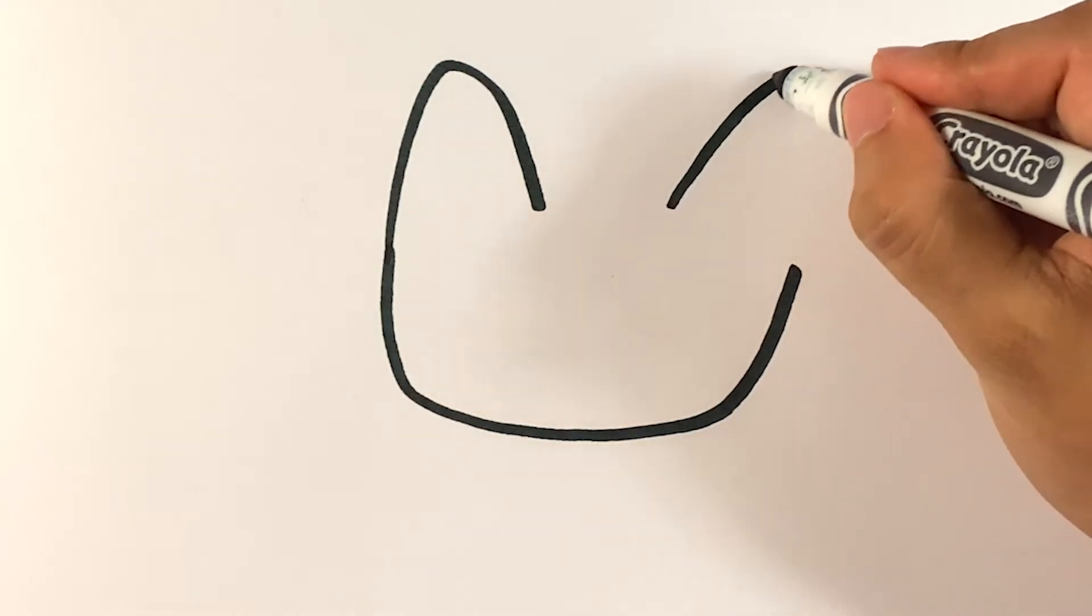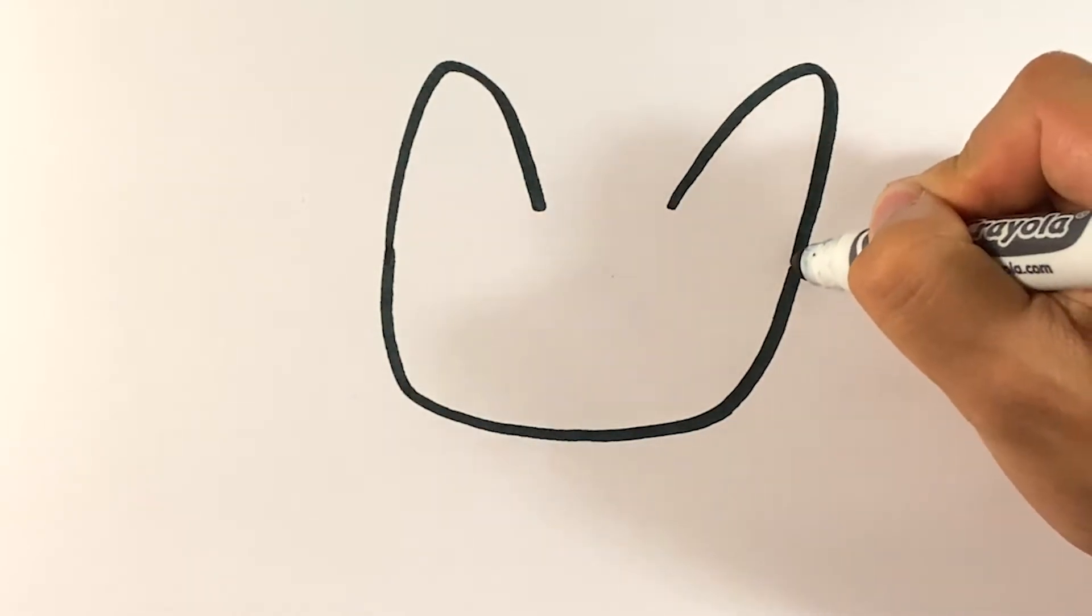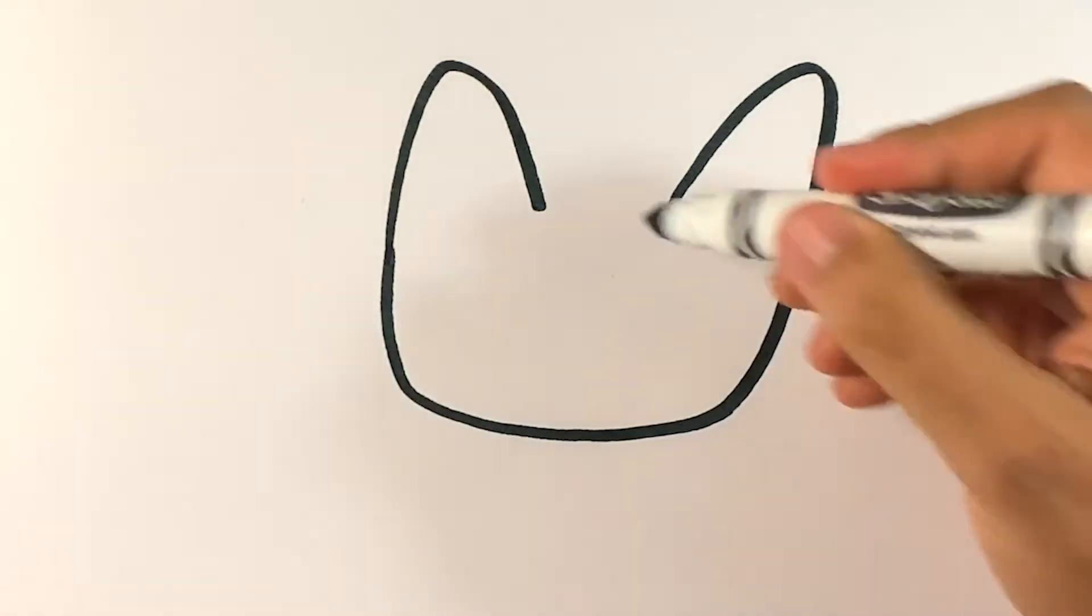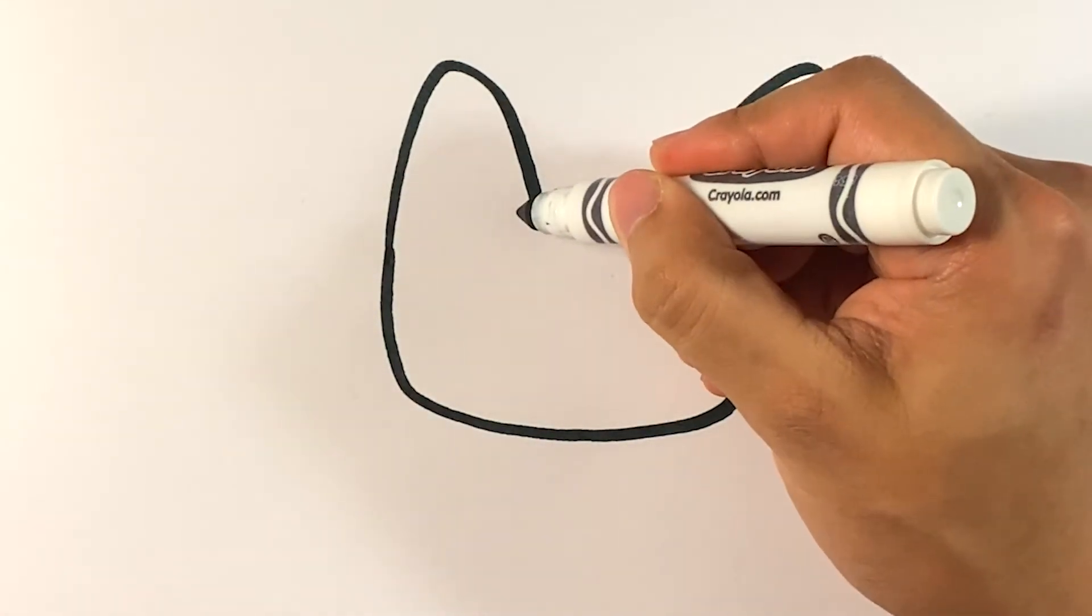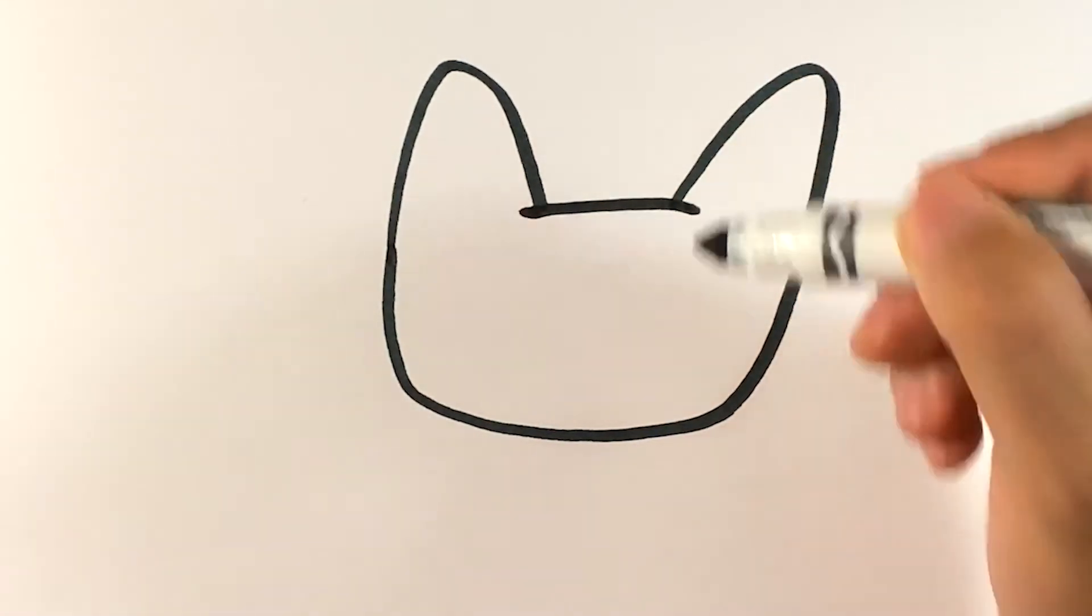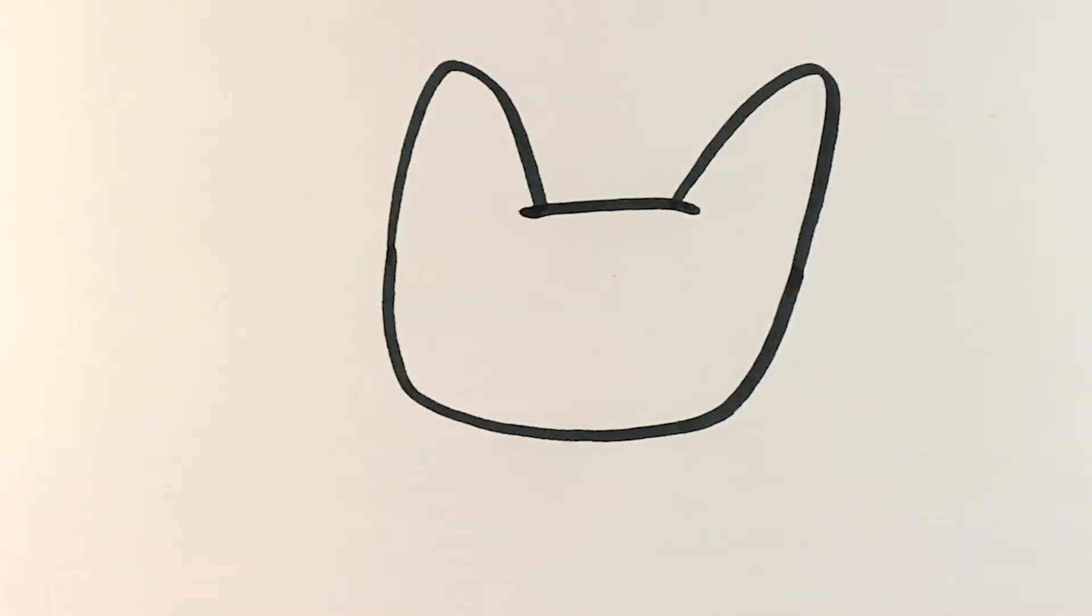And here's that's for one ear. Let's try to copy that shape as close as we can for that other ear. Pull across. Right on.